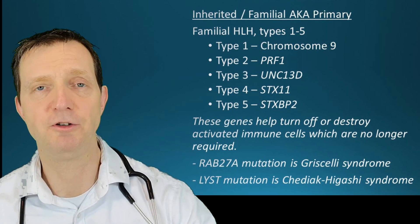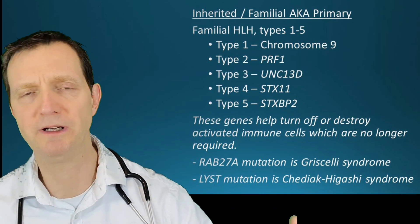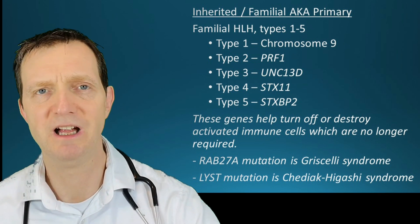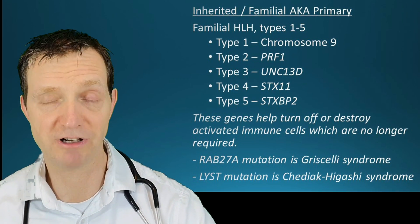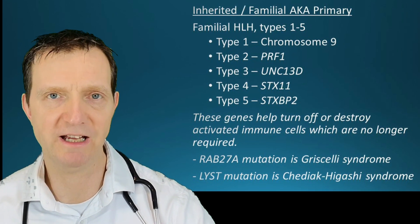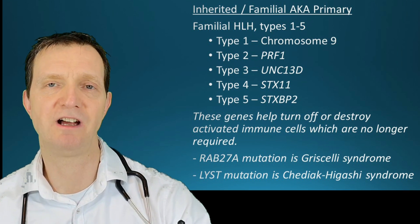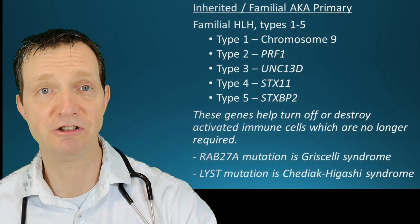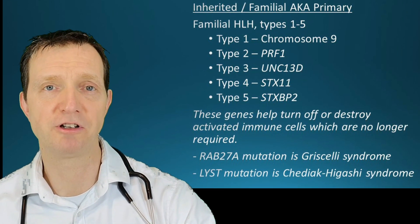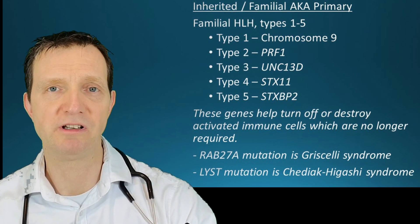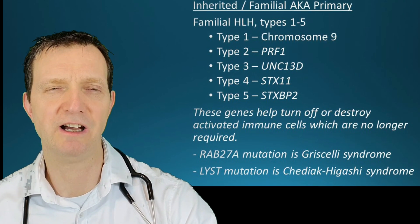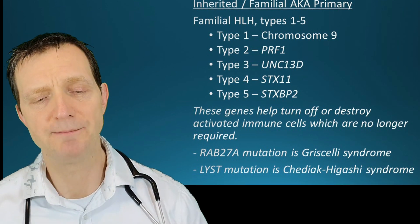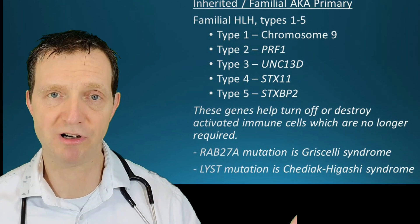There are also lots of mutations being discovered every few years. There is the RAB27A mutation, which is basically called Griscelli syndrome, and you've also got the LYST mutation, which causes Chediak-Higashi syndrome. These are all primary forms of HLH.